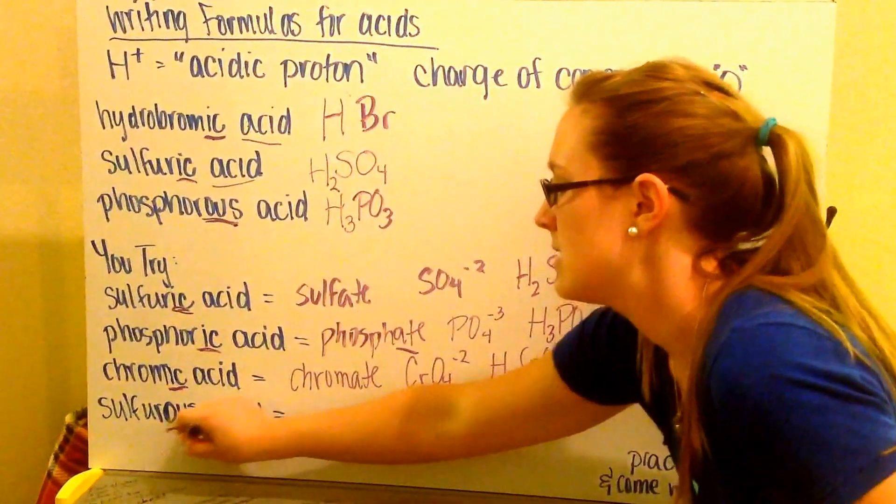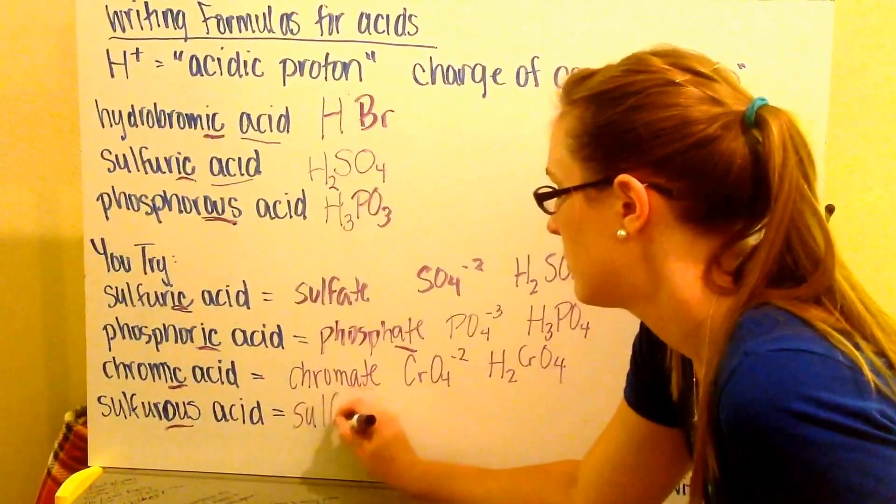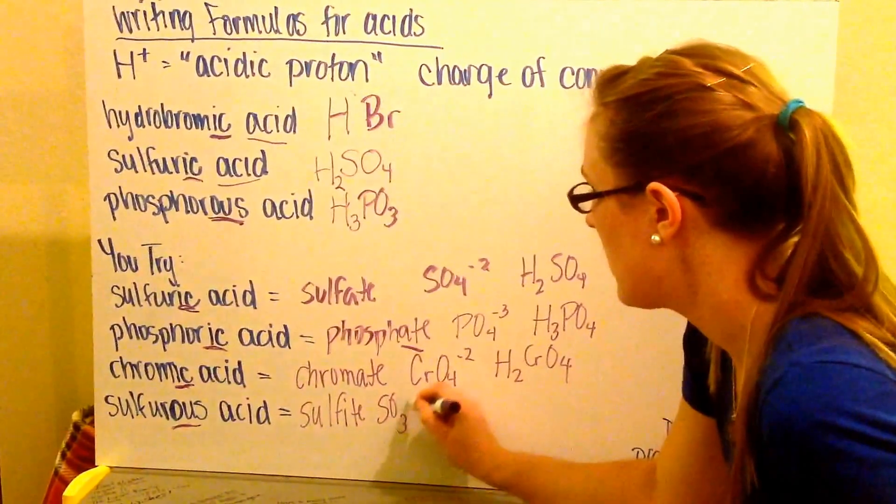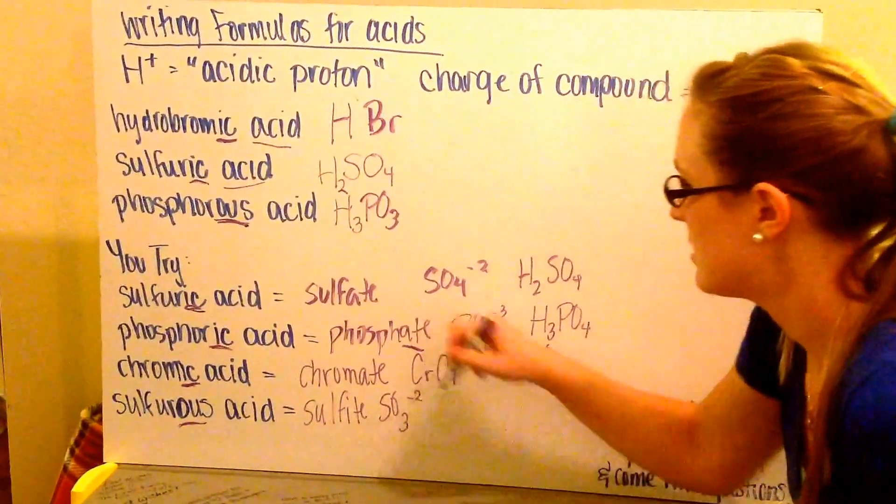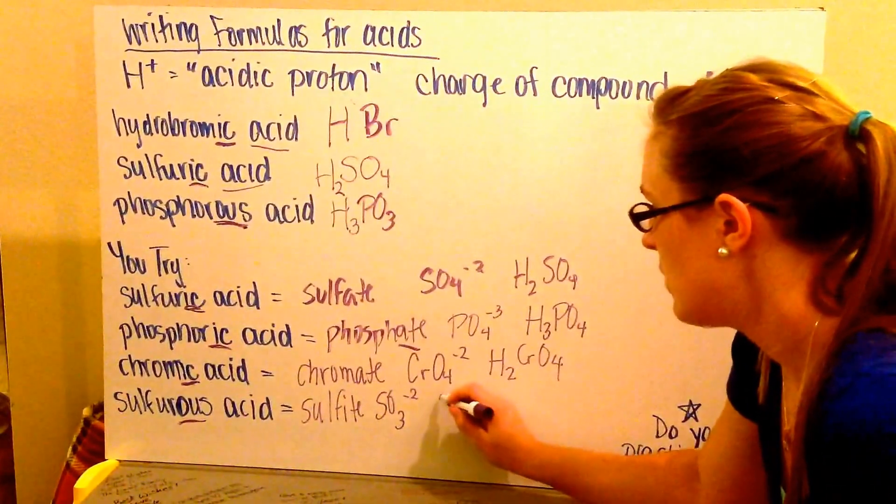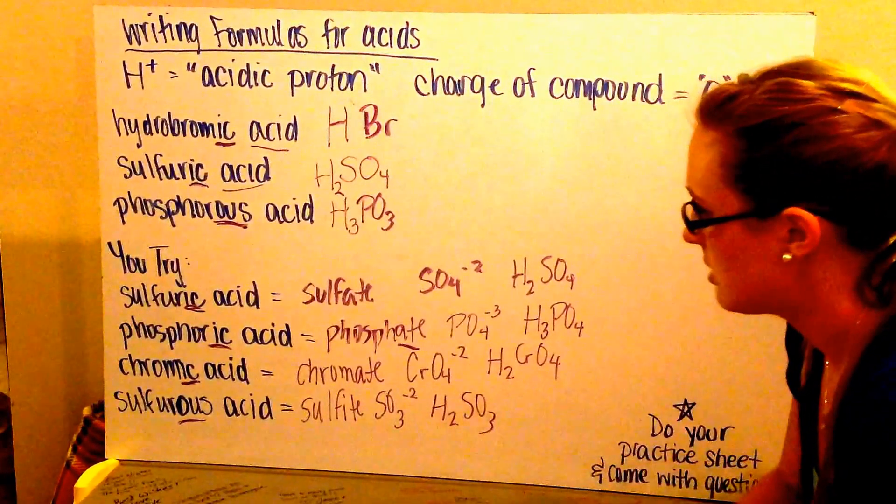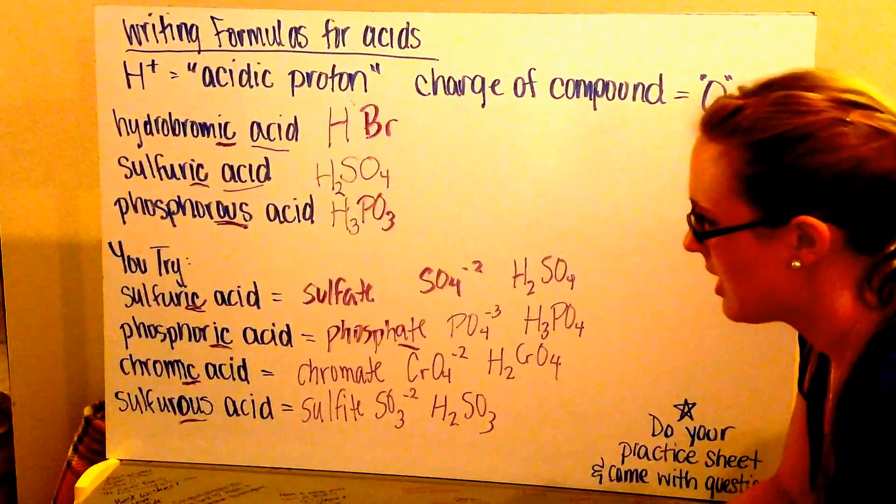Then sulfurous acid means I need to use sulfite, which is SO3 minus 2, one less oxygen than sulfate. So I need two hydrogens in front of that, so again I have H2SO3, which is sulfurous acid.